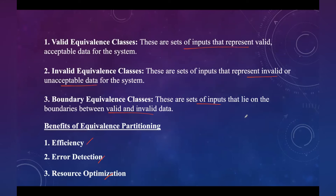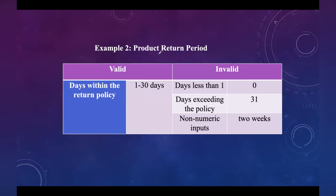For a product return period where the return window is 30 days, the valid class includes any value between 1 and 30 days. Invalid classes include: days less than 1 (e.g., zero), days exceeding the policy such as 31 days, and non-numeric input such as 'two weeks', which is invalid since the input expects a numeric value.